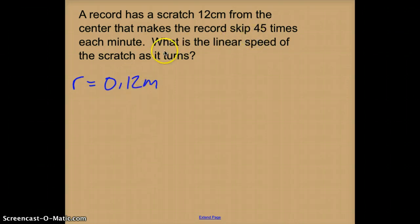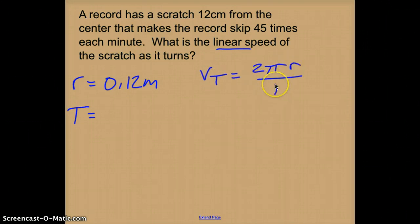That makes the record skip 45 times each minute. So what I need is my time period. I'm going to find the linear speed. So my tangent velocity is equal to 2π times the radius, which I have, divided by the time period. So I need the time period.